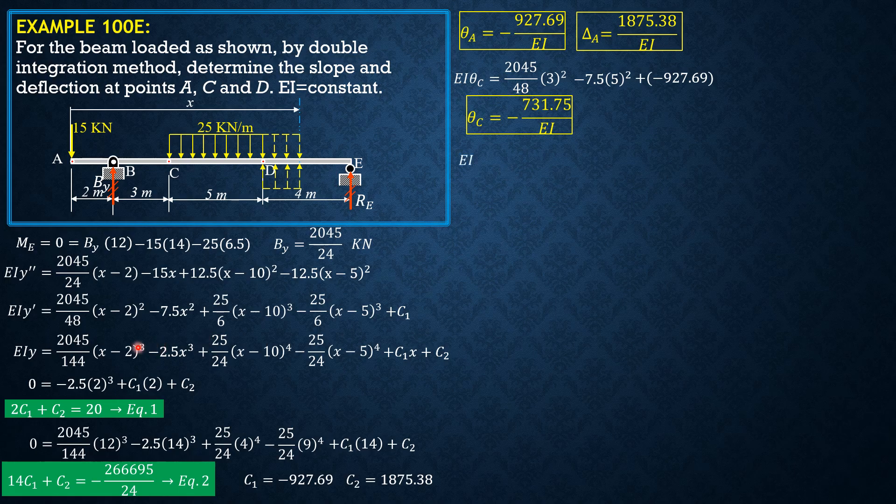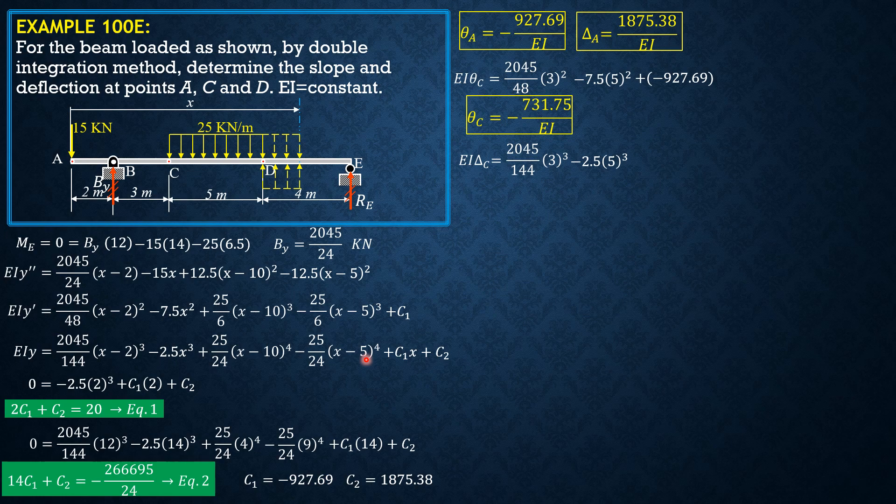For deflection at C, EI delta C equals 2045 over 144 times 3 cubed minus 2.5 times 5 cubed plus negative 927.69 times 5 plus 1875.38. So delta C equals negative 2692.13 over EI.